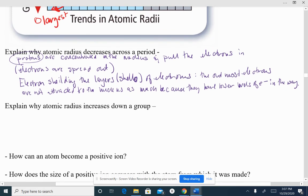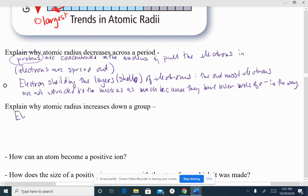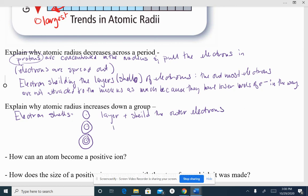Atomic radius increasing down a group is electron shells. Each time we go down a group we add another layer. So these electron shells layer and shield the outer electrons, which means that those outer electrons, the more layers that we have, get pushed out even further.